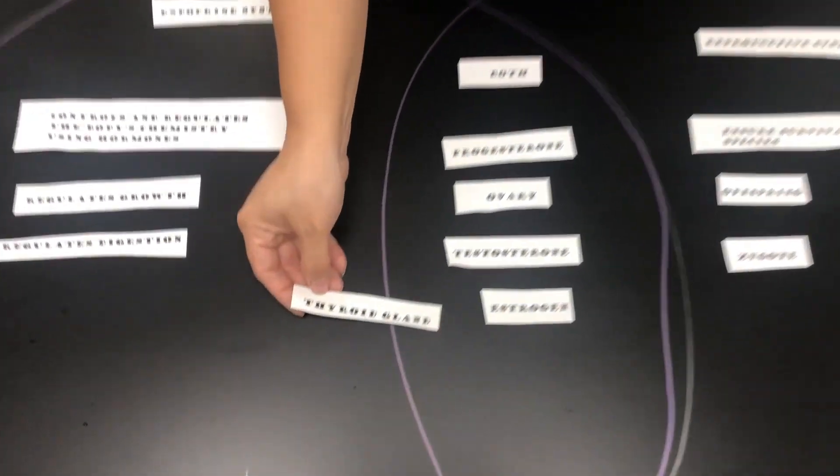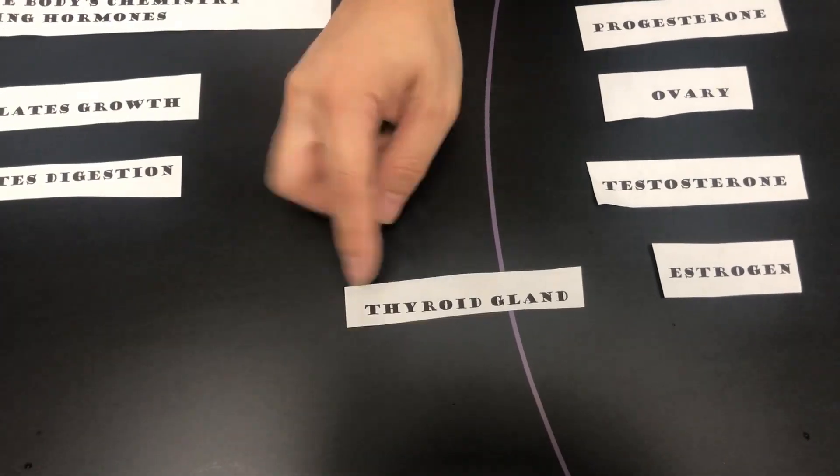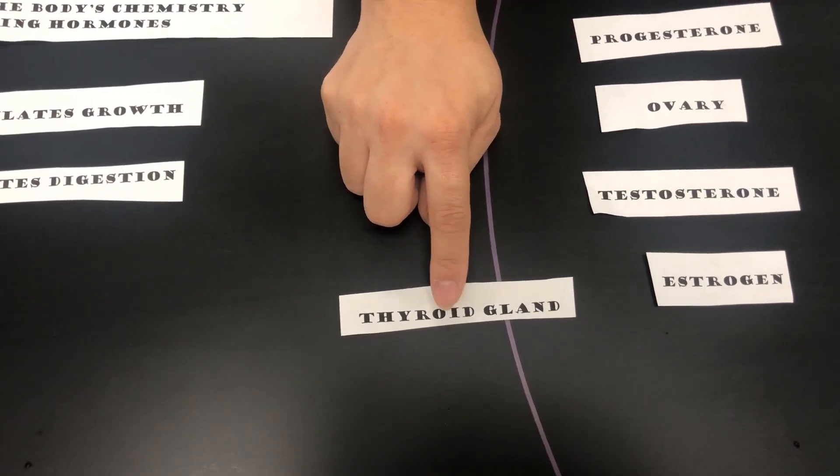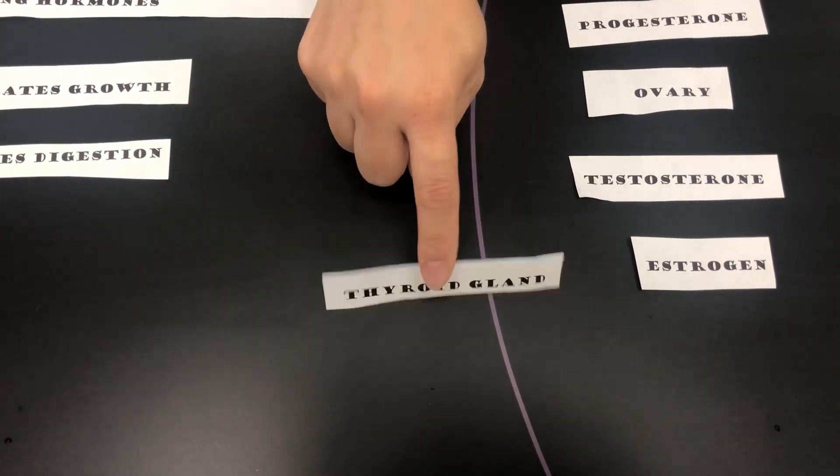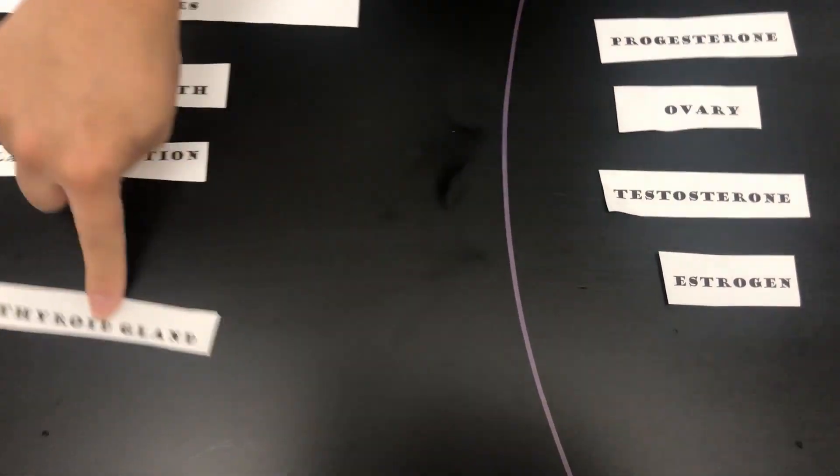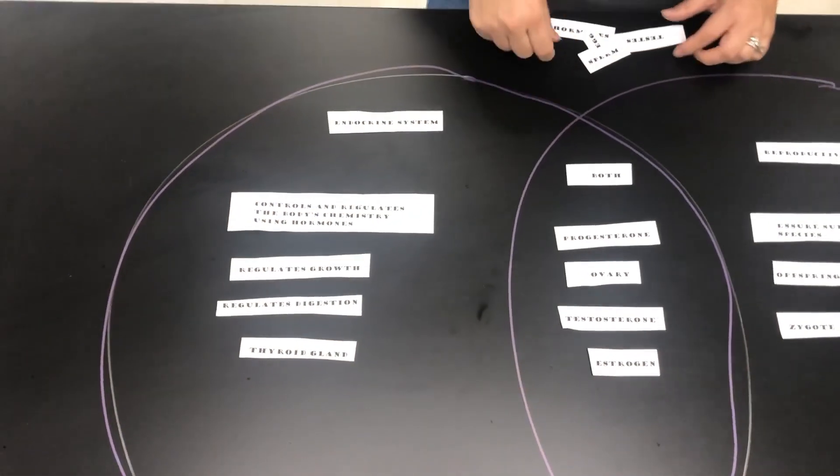Thyroid gland. This gland, remember, was discussed. It's found in kind of our throat area, neck, that produces hormones. This is part of the endocrine system.